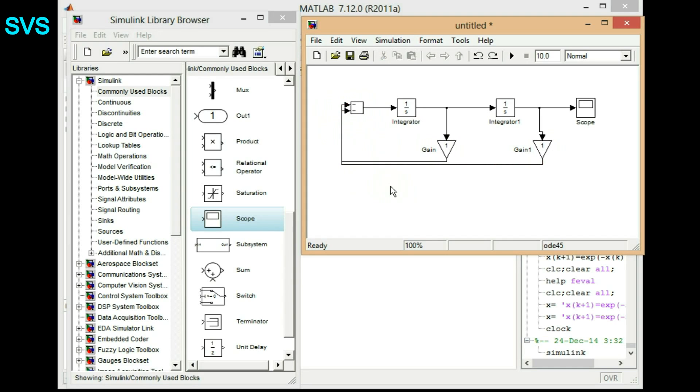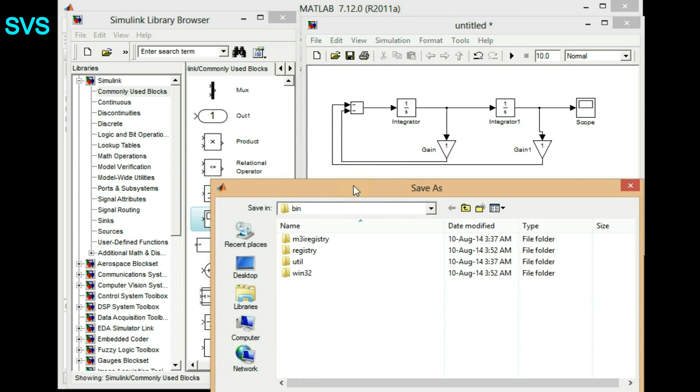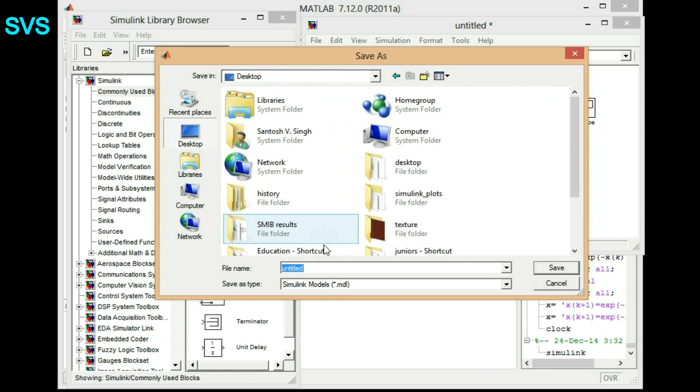So we have just completed our differential equation diagram. It looks very simple as compared to our first order differential equation expression we had. So let's again save this file. Let's name it model_trial and save it.